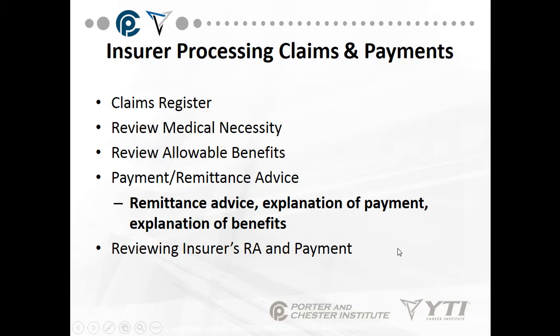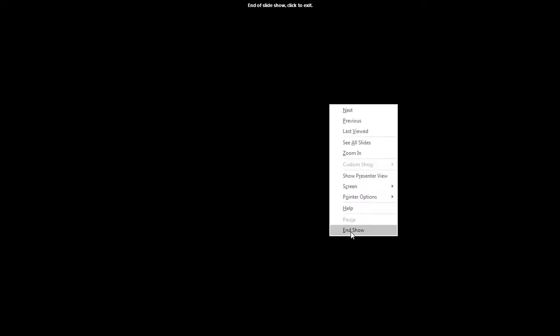In the office, once the remittance advice and payment are received, they are applied to the patient's account. If the account zeroes out, the claim is closed. If a balance remains and the patient has secondary insurance — as Medicare patients often do — the balance is billed accordingly. That is the end of insurance and billing.